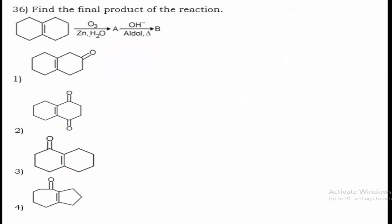Question 36: Find the final product when cyclohexene is oxidized in the presence of Zn and H2, and then undergoes aldol condensation on heating in the presence of a base. The final product formed is compound 4, so option 4 is the right answer.